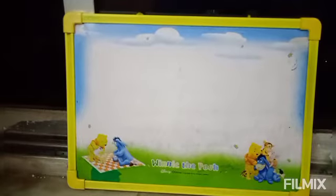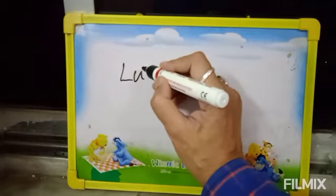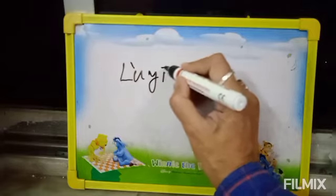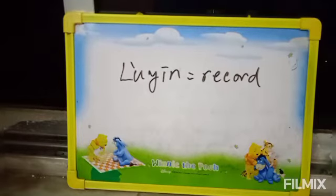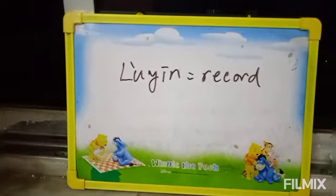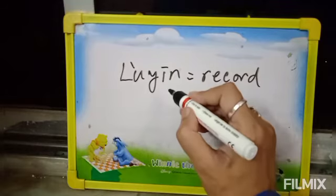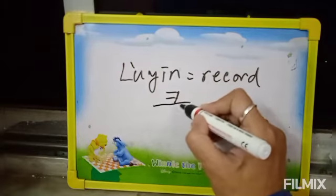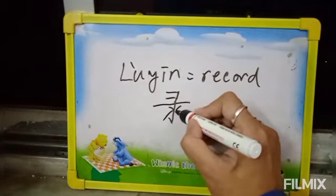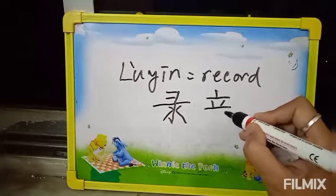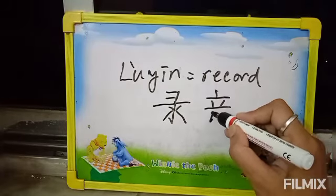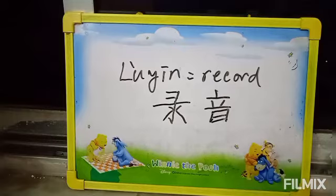The next character is Lu Yin. The English meaning is record or cassette — from which you are learning some dialogue or language in an audio-visual method. It is called a record or cassette. I am showing you how to draw this character. This is Lu Yin.